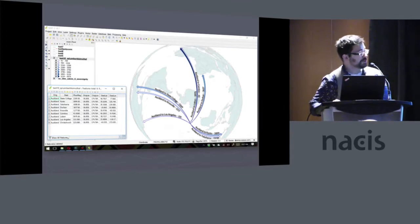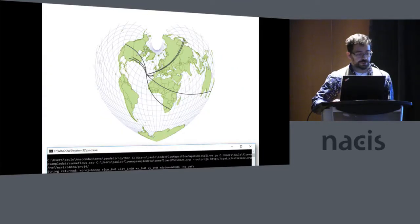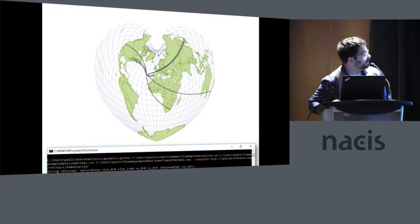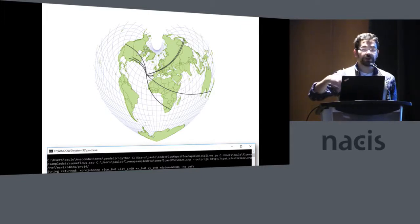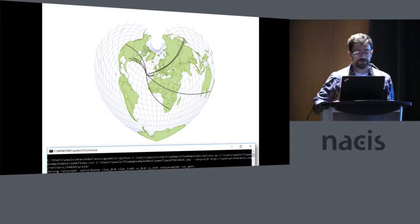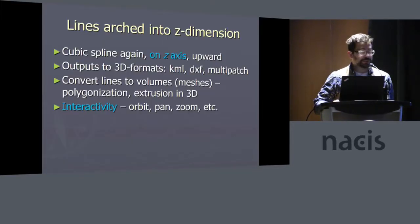Here's an example with an azimuthal map projection centered on the south pole, with flows coming out of New Zealand. You can go crazy and do fun things like the Bond projection, and the flows all draw in the geometry of the projected coordinate system.